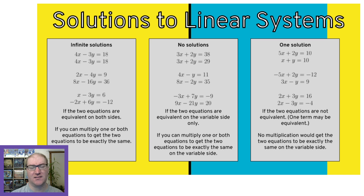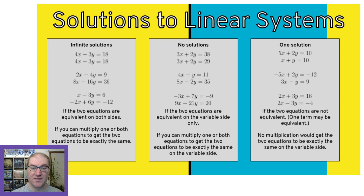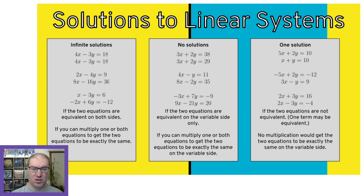Then we look at the last box on the left: infinite solutions. If two equations are exactly the same they're going to have infinite solutions. Two identical graphs are just going to be the same thing on the graph paper twice — overlapping completely — so every point is the same for both graphs. Of course, 4x minus 3y equals 18 and 4x minus 3y equals 18 has unlimited solutions because they're the same equation twice. The second and third examples are not equivalent at first glance, but if you multiply one or both equations and everything becomes exactly the same, that's another example of infinite solutions.